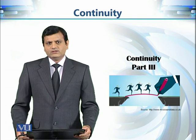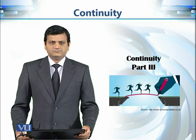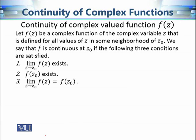Let's revise the definition of continuity. We defined continuity of a given complex valued function in two ways. The first definition involves calculating the limit of a given complex valued function at point z₀ — in other words, when z approaches z₀, if this limit equals the functional value at z₀ (and of course the limit must exist), then the function is continuous.